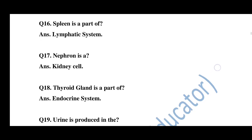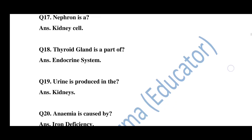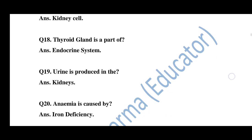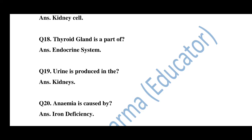Question number 16: The spleen is part of which system? Answer: The lymphatic system. Question number 17: Nephron is a cell of which organ? Answer: Kidney. Question number 18: The thyroid gland is part of which system? Answer: The endocrine system. Question number 19: Urine is produced in which organ? Answer: Kidney. Question number 20: Anemia is caused by? Answer: Iron deficiency.